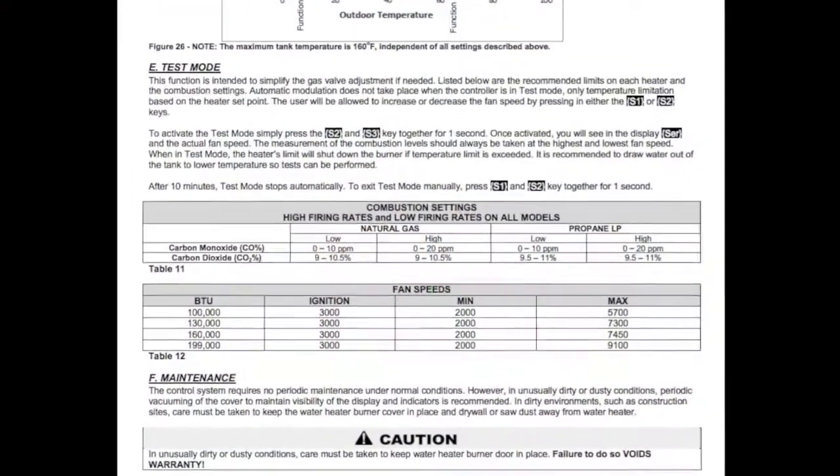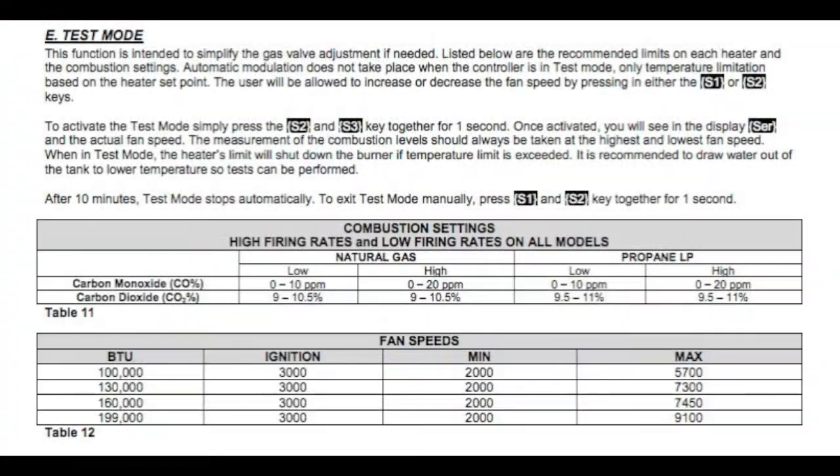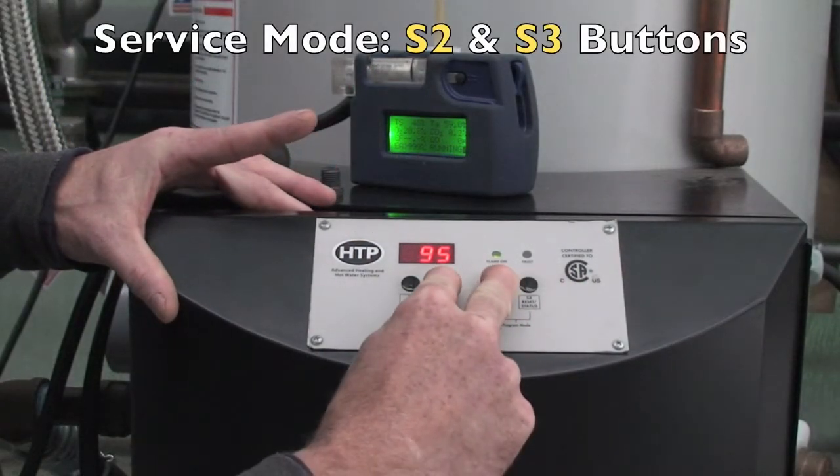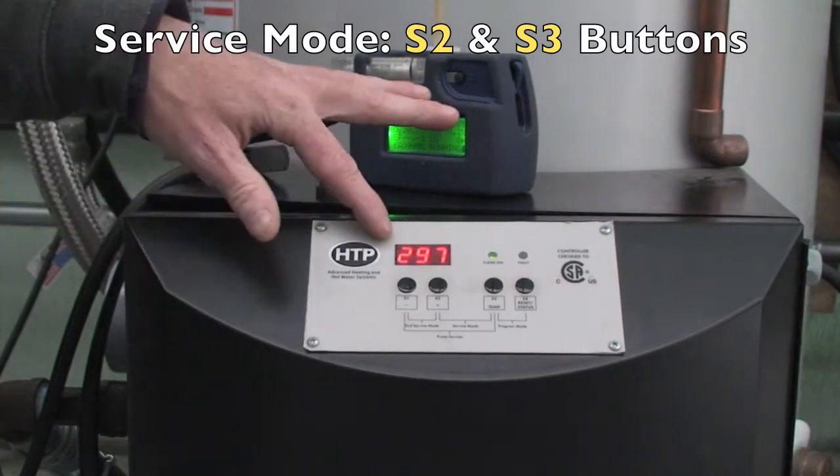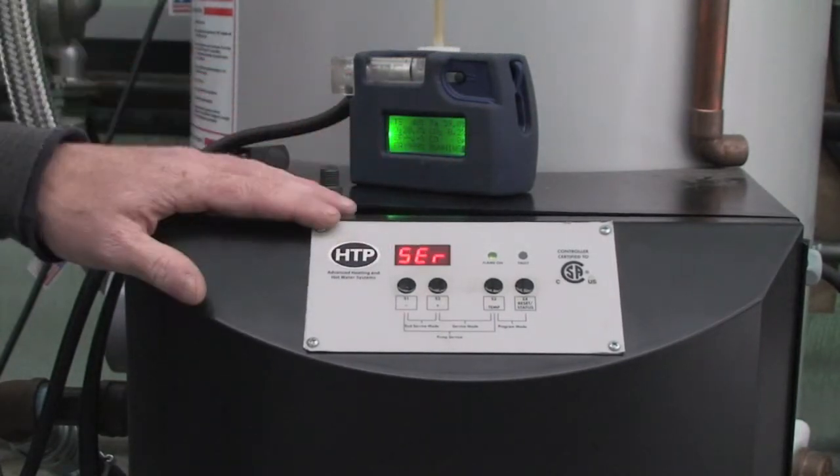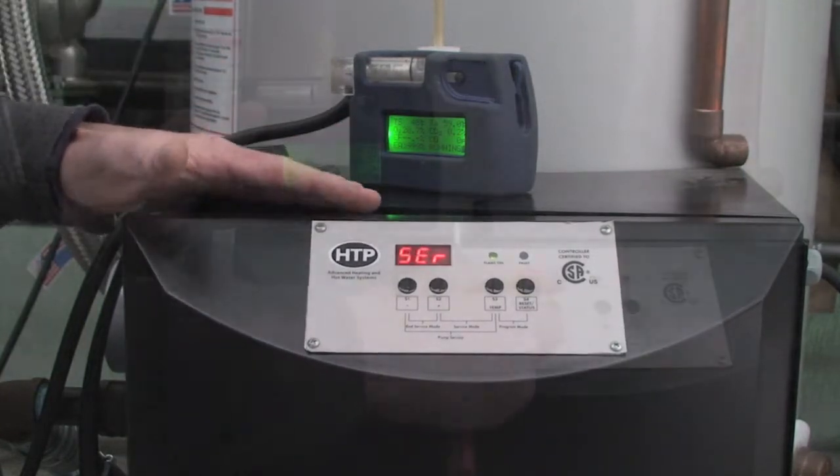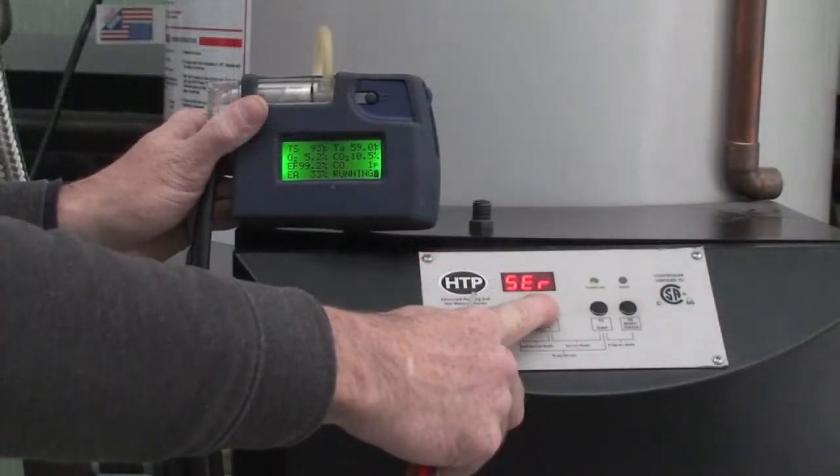Testing should be done first in high fire followed by low fire. To access service mode on the Phoenix models, press and hold the S2 and S3 buttons for 3 seconds. The control will display SER and the ignition speed. After ignition has been established, press the S2 plus button until display reads unit's high fan speed.